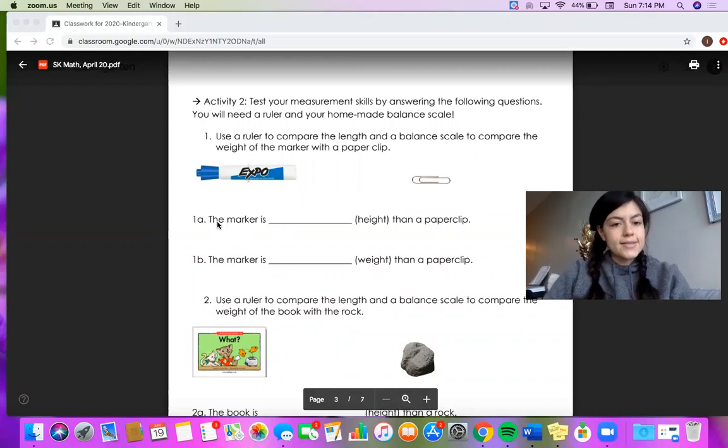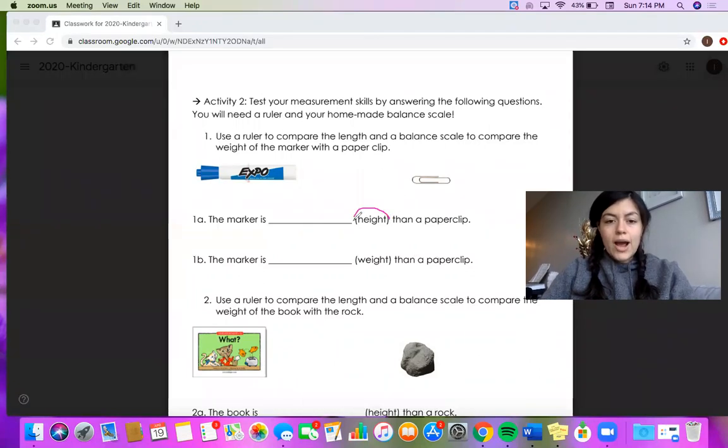Then you would have to fill in the sentences just like I did in the problem above. So the first sentence says the marker is then the paper clip and this one is asking you to answer the question about height. So your keywords would be either shorter or longer. The second sentence, the marker is then the paper clip, but in this one they're asking you to address the weight. So your options would be the marker is lighter or the marker is heavier.